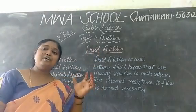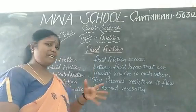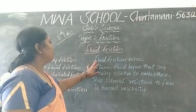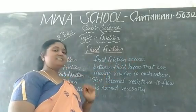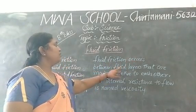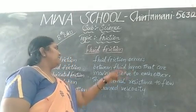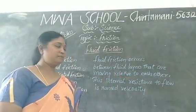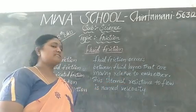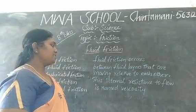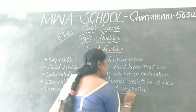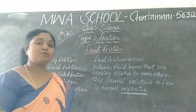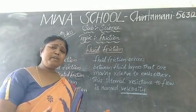What do you mean by fluid friction? Fluid is nothing but liquid only, right? Fluid friction occurs between fluid layers that are moving relative to each other. This internal resistance to flow is named as viscosity. What do we call it? We call it viscosity.